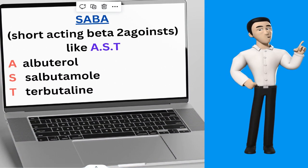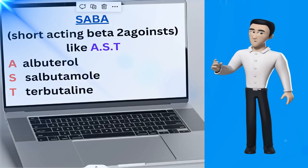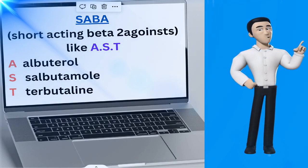SABA stands for short-acting beta-2 agonists like A.S.T.: A for albuterol, S for salbutamol, T for terbutaline.